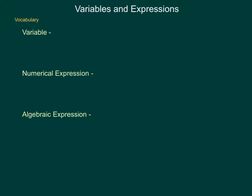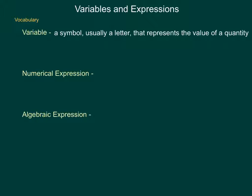In this lesson, Variables and Expressions, we're going to start by taking a look at some of the most basic vocabulary and concepts associated with Algebra 1. The first is: exactly what is a variable? A variable is a symbol, usually a letter, that represents the value of a quantity. So if I have an expression such as 2x plus 3, the different parts are the 2x and the 3. The 2x is our variable term. The x represents some unknown value — it could change, it is variable.